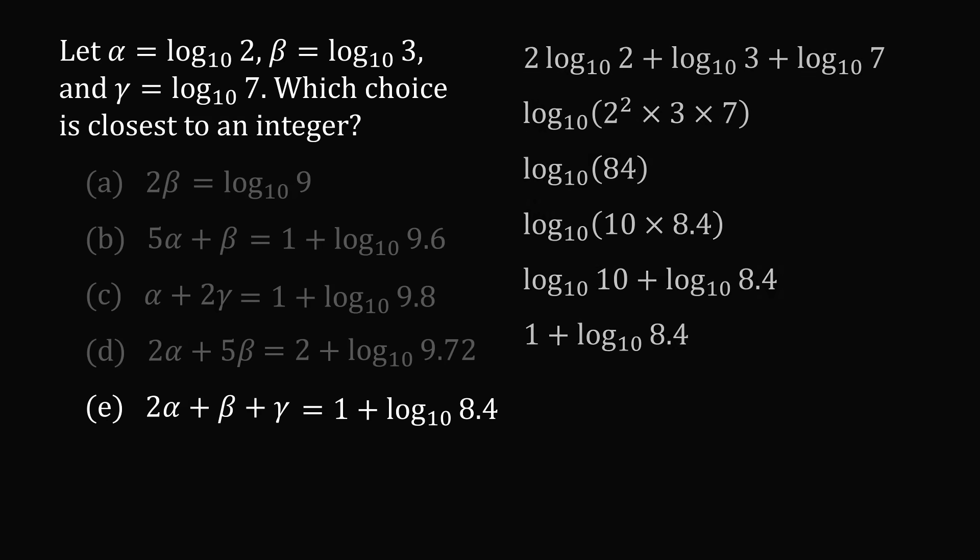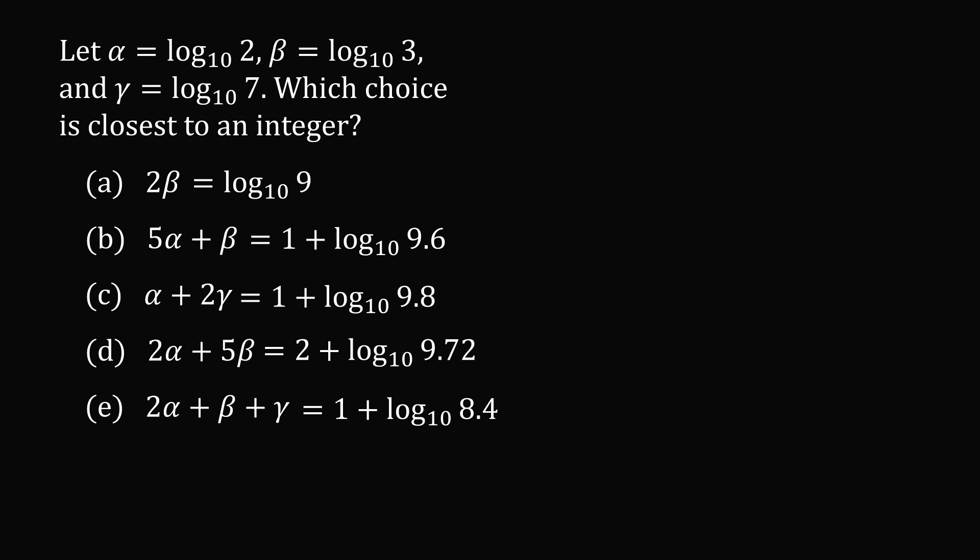So we have our answer choices in some sort of standard form. Now, which choice is closest to an integer? In order to figure that out, we just need to focus on the fractional parts or the decimal parts. We can ignore any of the whole number parts of the answer.